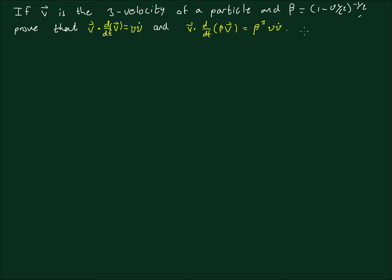We're going to be solving a special relativity problem. This problem isn't really as complicated as it looks, as long as you're familiar with special relativity, three velocities, and four velocities. The problem is: if V is the three-velocity of a particle and beta equals (1 minus V squared over C squared) to the power of minus a half, prove that V dot d/dt of V is equal to V times V-dot, and V dot d/dt of beta V equals beta cubed times V times V-dot.